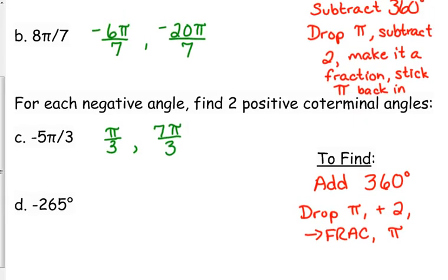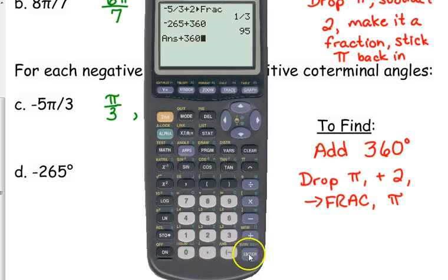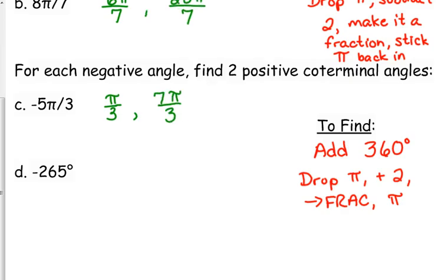Notice that with radians, co-terminal angles always have the same denominator. In our first example they all had a denominator of 7; in our second they all have a denominator of 3. That will always happen — if you do not get the same denominator, you did something incorrectly. The degrees are easier: all we have to do is add 360 to negative 265, giving 95, then add 360 again to get 455.